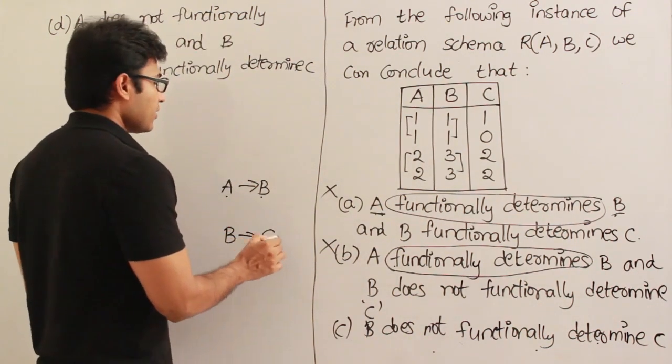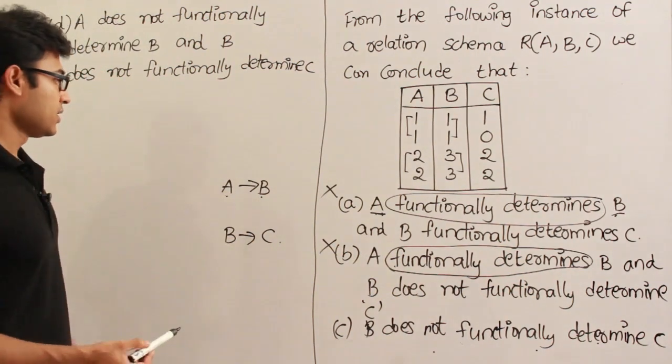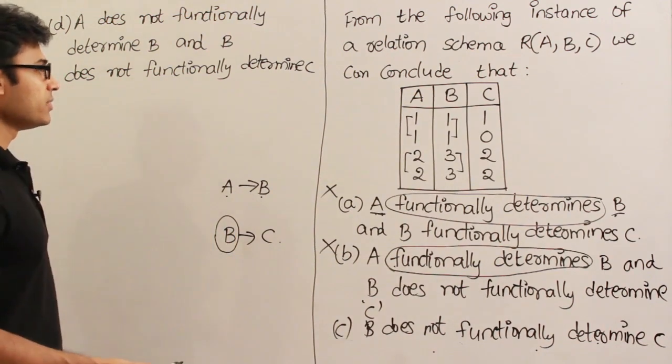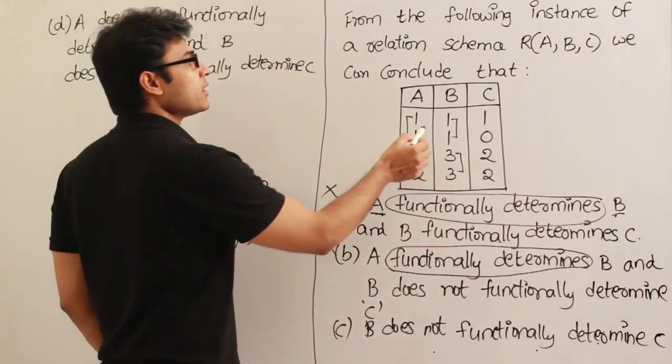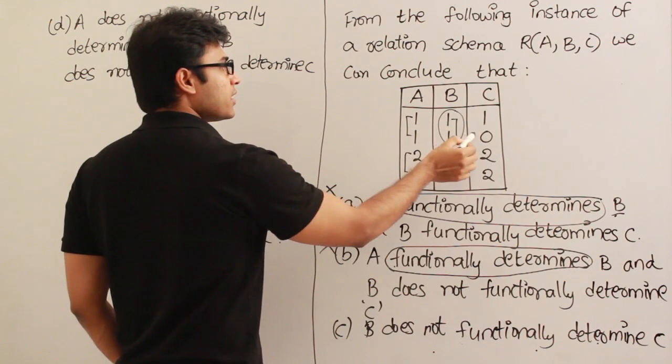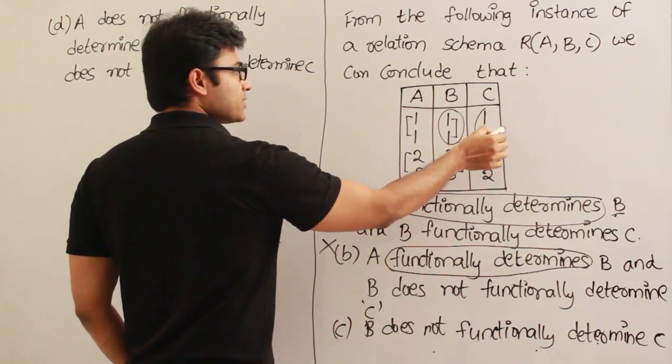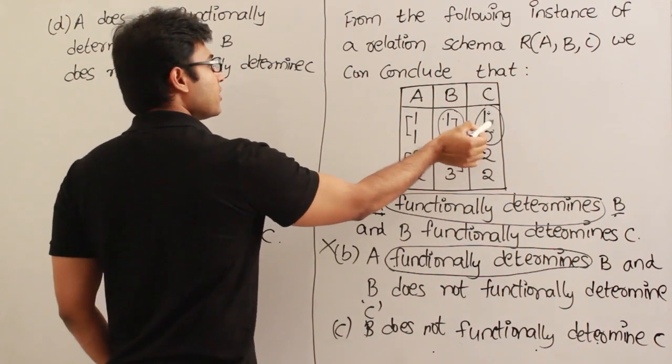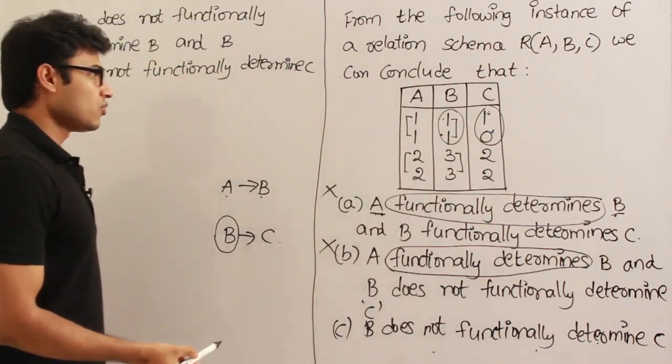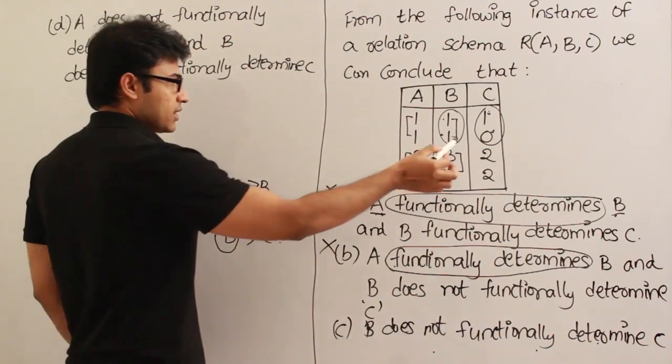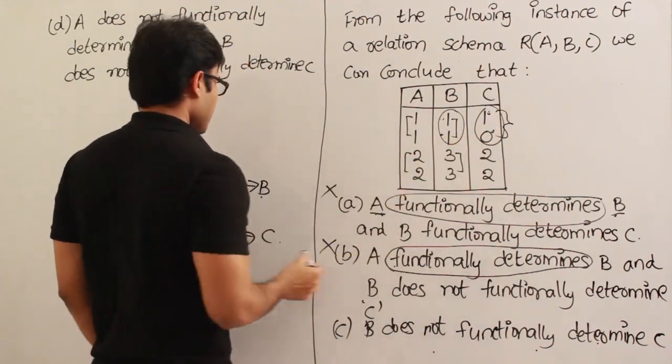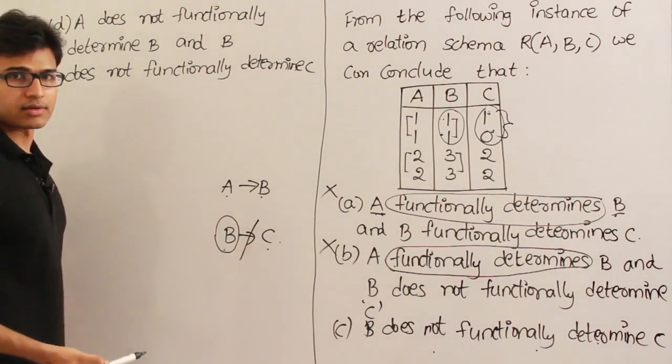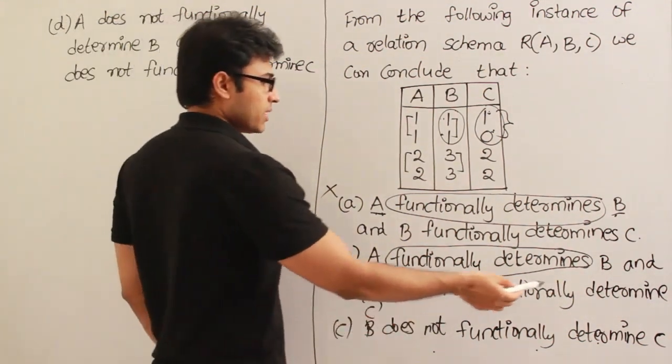B determines C, whether it holds or not on this instance. When will there be a violation? Whenever there are repetitions in the left-hand side, which means if B repeats. Yes, B is repeating here. What about C? C is not same, which means given a value of B as 1, you cannot come up with a unique value for C. Therefore clearly on these two tuples itself it doesn't hold. Therefore B does not determine C, I'm sure about that.